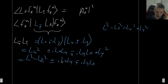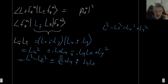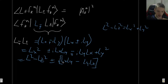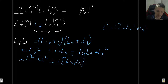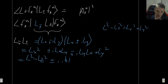Let's factor out ±i from the remaining terms. The ±i goes outside, and what remains inside is LxLy - LyLx, which is just the commutator [Lx, Ly]. So we have L² - Lz² ± i·[Lx, Ly]. We have already calculated this commutator - it is simply iℏLz. So we have i times i which is minus, and that minus flips the ± to ∓, giving us L∓L± = L² - Lz² ∓ ℏLz.